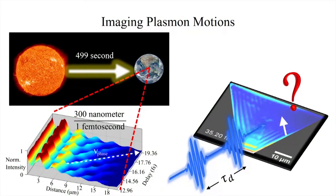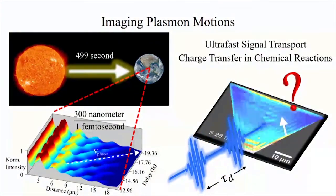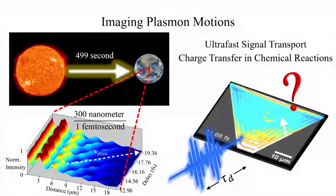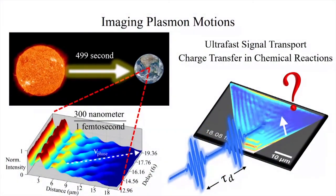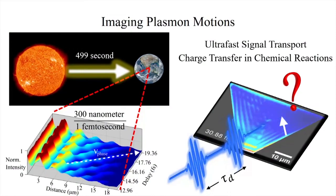What we learn from the electron dynamics are the phase and group velocities of the surface plasmon polaritons, which determine the ultra-fast signal transport in plasmonic circuits, and they are also crucial in the understanding of the charge transfer process of chemical reactions that happen on the nanometer spatial and femtosecond temporal scale.